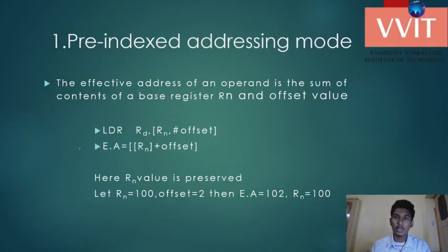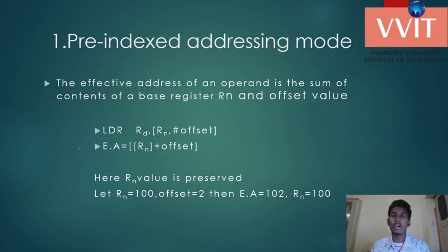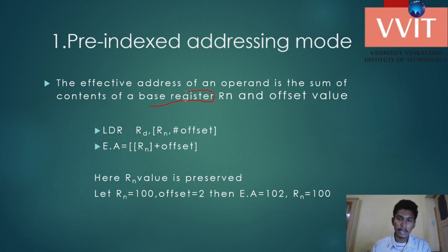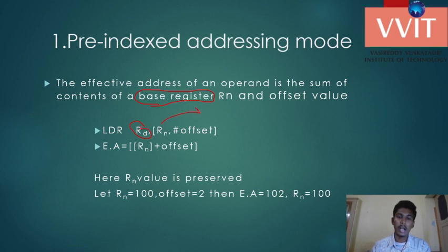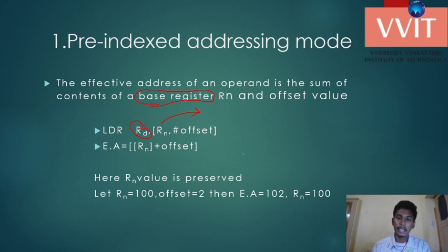Let us see the addressing modes in the ARM structure. The first addressing mode is the pre-indexed addressing mode. In this addressing mode, the effective address of an operand is the sum of the contents of the base register Rn and the offset value. So the destination operand is Rd, and Rn is the base register of the source operand. The effective address is obtained by adding the contents of Rn and the offset.